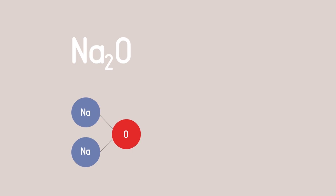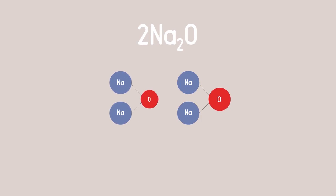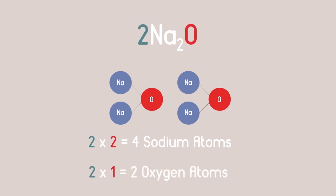While SnO2 has one tin atom and two oxygen atoms. If you have 2Na2O, you have two times two sodium atoms, that's four sodium atoms, but you only have two times one oxygen atoms.